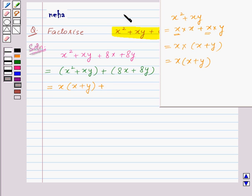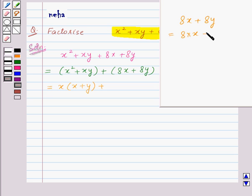Plus, we have 8x plus 8y. This is equal to 8 into x plus 8 into y. The factor 8 is common in both the terms, so we will get 8 into x plus y. So 8x plus 8y is 8 into x plus y.